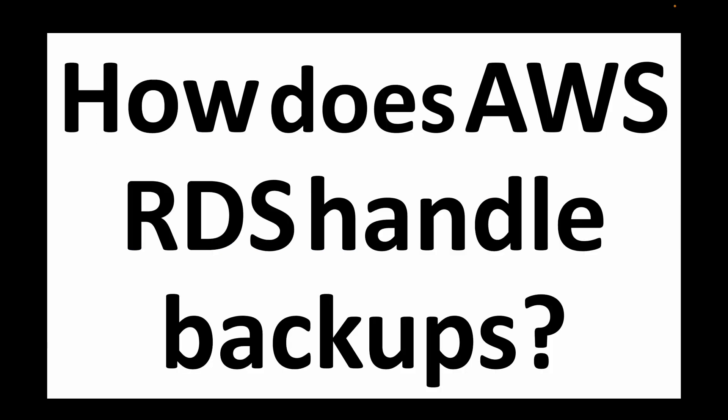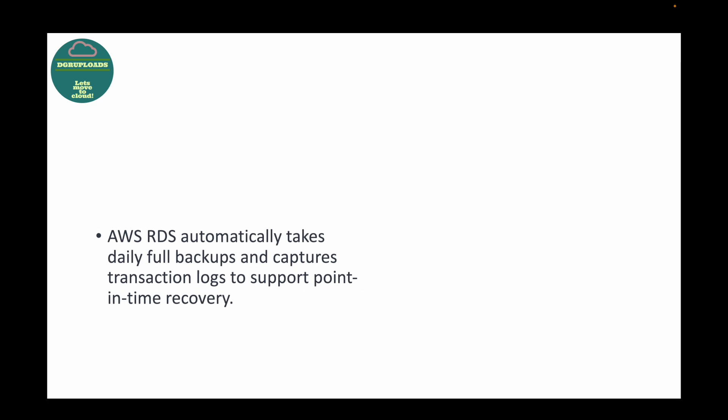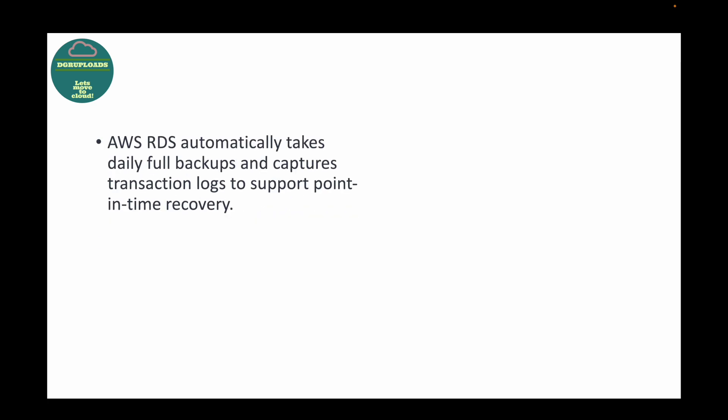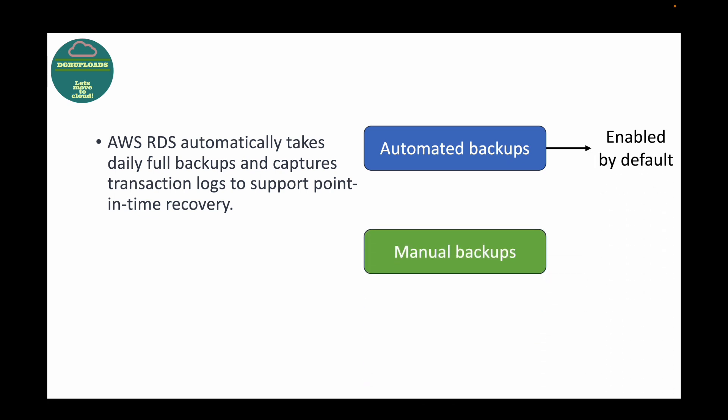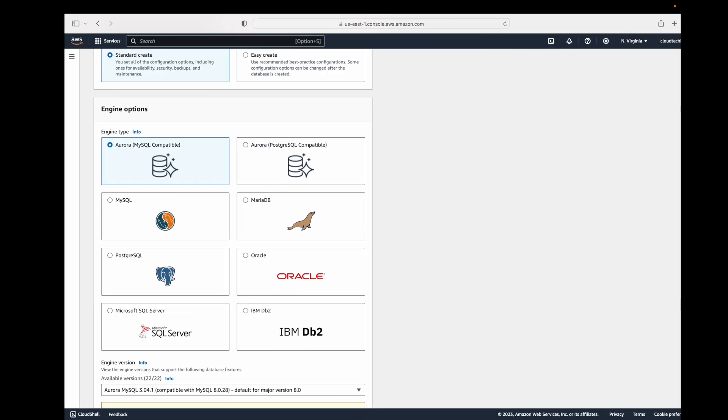The next question is: how does AWS RDS handle backups? When we talk about AWS RDS backups, there are two types — automated backups and manual backups. Automated backups are enabled by default and manual backups are user-initiated. Automated backups take daily full backups and also capture transaction logs, which helps you with point-in-time recovery.